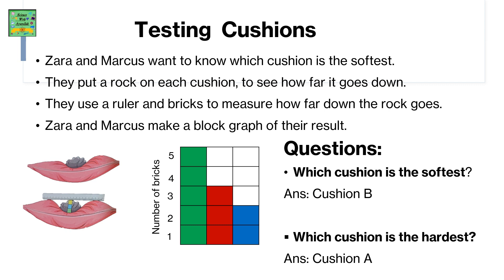Zara and Marcus make a block graph of their results. Questions: which cushion is the softest? Answer: cushion B. Which cushion is the hardest? Answer: cushion A.